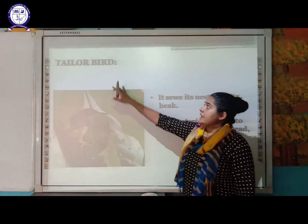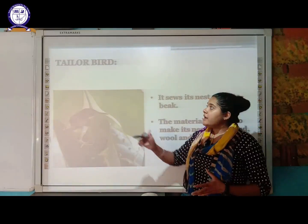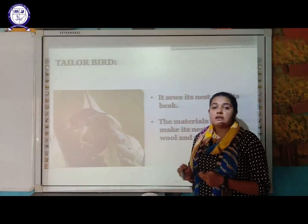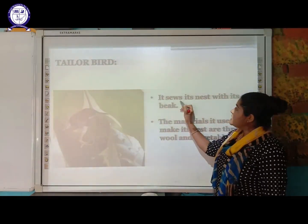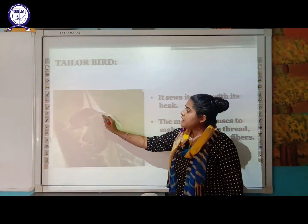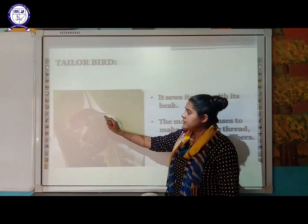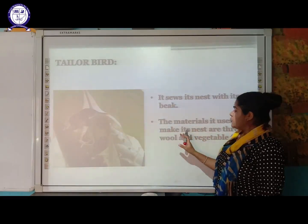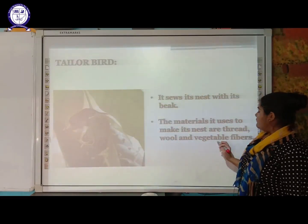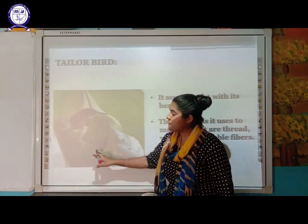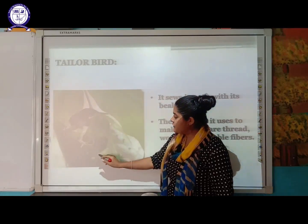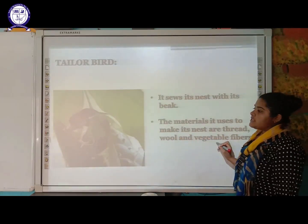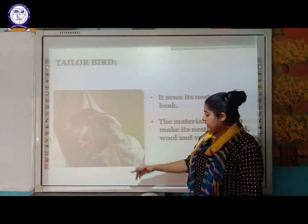The tailor bird sews its nest with its beak — just like a tailor who stitches clothes. It uses a pointed beak to sew leaves together. The materials it uses are thread, wool, and vegetable fiber. As seen in the diagram, it folds leaves and sews them with its beak.